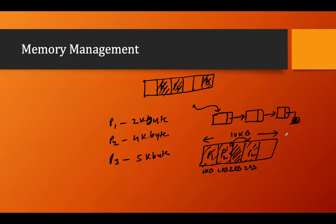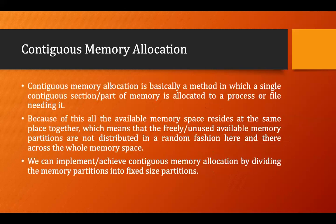This is how non-contiguous memory allocation works, and here comes the concept of paging and segmentation, which we'll see later. Contiguous memory allocation is basically a method in which a single continuous section of memory is allocated to a process or file.